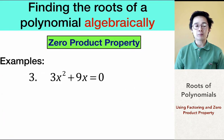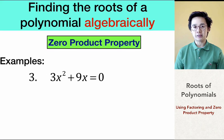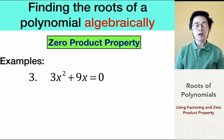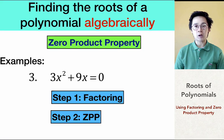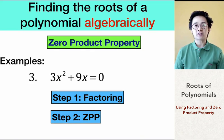For problem number three, we have 3x² + 9x = 0, which is not in factored form. We need two steps: first factor the polynomial, then use the zero product property to find the roots. You need to know factoring rules to proceed with the zero product property.